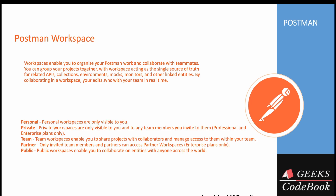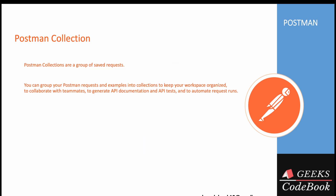There are a number of workspace types: personal, private — personal is for your use only, private is for you and your team members. Some options are available only with the enterprise version, so for learning these options won't be available — team, partner, and public. Team workspace enables collaboration across your team, and public workspace enables you to collaborate with anyone across the world, meaning those collections are openly available.